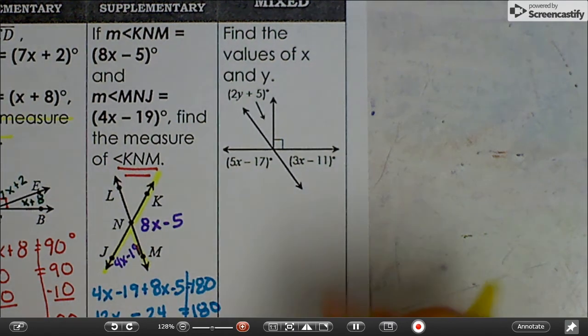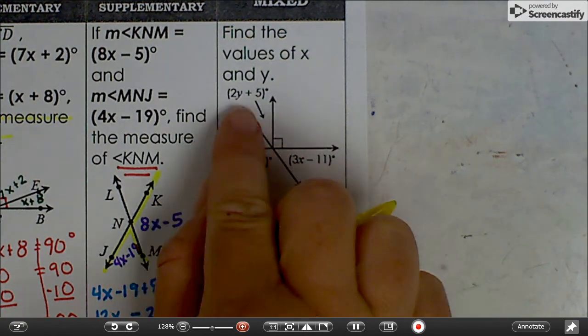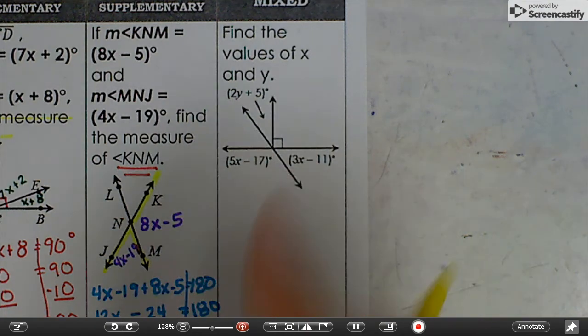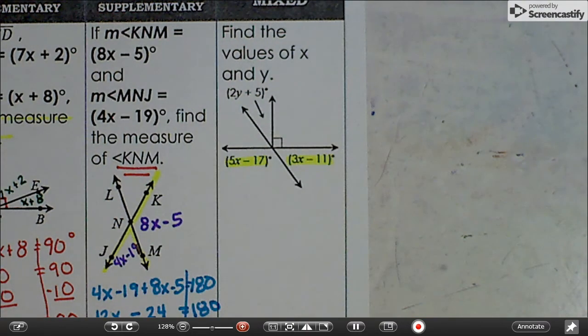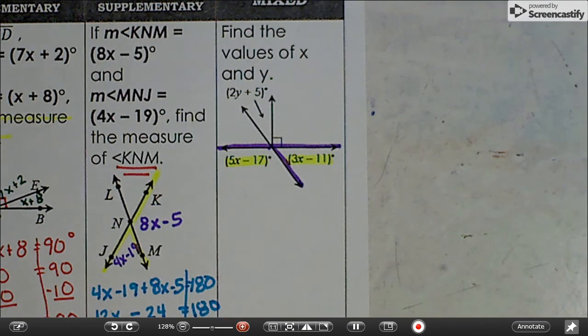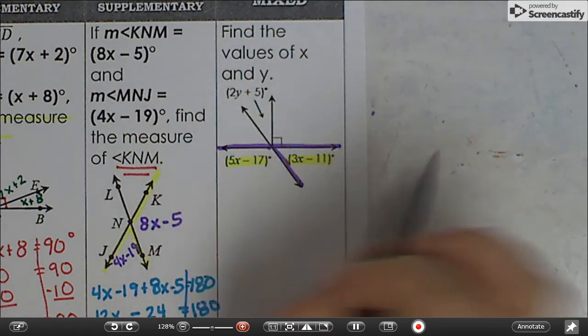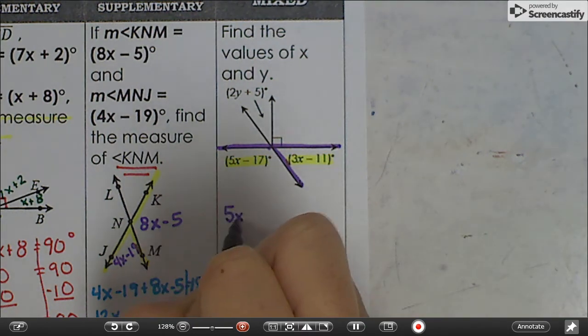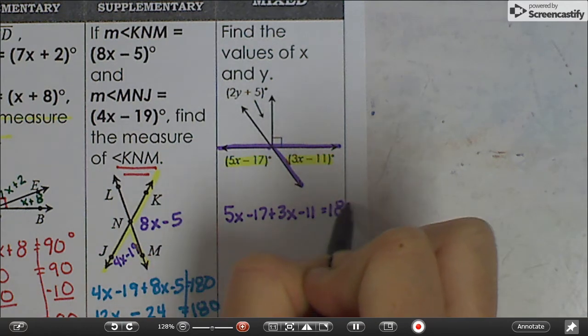First of all, we need to make sure when we're solving equations we have the same variable. So we wouldn't want to use this one with the y with these with the x to start. I'm going to highlight the ones with the x so I can look at their relationship. Those are right next to each other. They're adjacent, and they form a straight line, which means they add up to 180 degrees. They are a linear pair. So we would do 5x minus 17 plus 3x minus 11 equals 180 degrees.